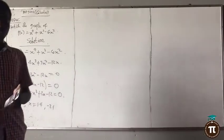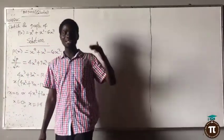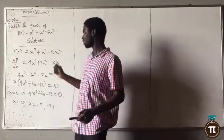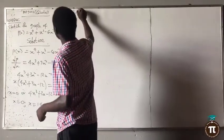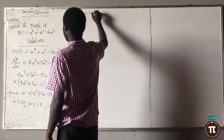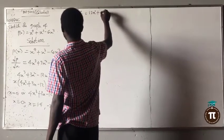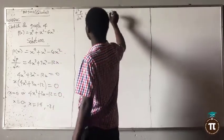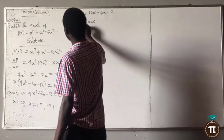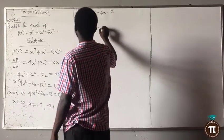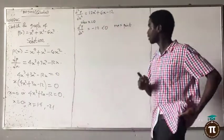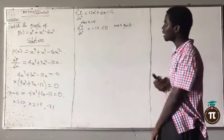Now let us determine the maximum and minimum points. These are the turning points, also called stationary points. Differentiate a second time: d²p/dx² = 12x² + 6x − 12. When x is zero, d²p/dx² = −12, which is less than zero — that is the maximum point.